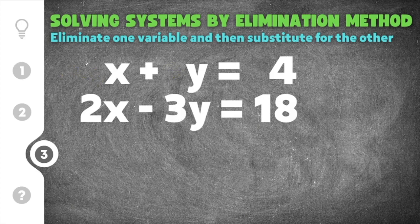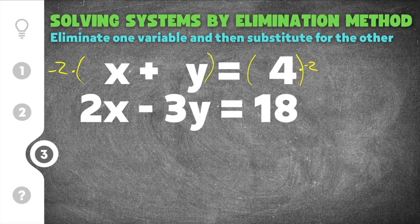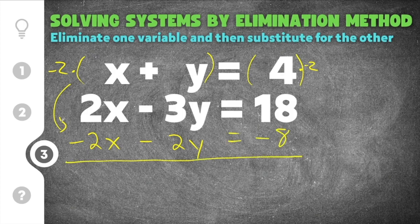I'm going to multiply to get rid of the x. I'll take the first equation and multiply everything by negative 2: negative 2 times x is negative 2x, negative 2 times positive y is negative 2y, and 4 times negative 2 is negative 8. So the first equation rewritten is negative 2x minus 2y equals negative 8.